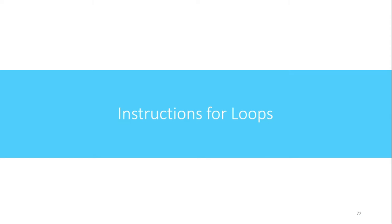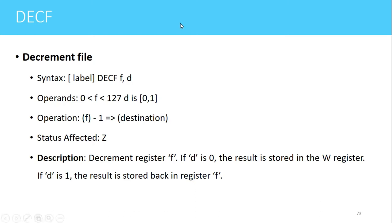Welcome. In this video we'll see the instructions for creating loops in PIC 16F877. The first instruction is DECF. Using this instruction we can decrement the contents of a file register by one. The syntax is DECF f, d — where f is the file register (a RAM memory location or SFR) and d is the destination bit: 0 for the working register, 1 for the same file register. The flag affected is the Zero flag.